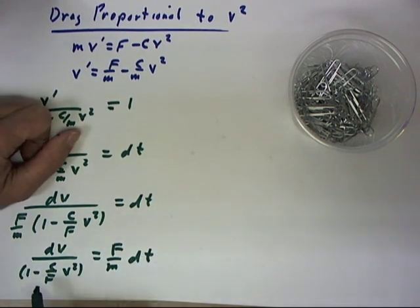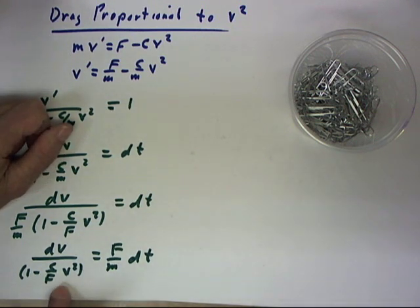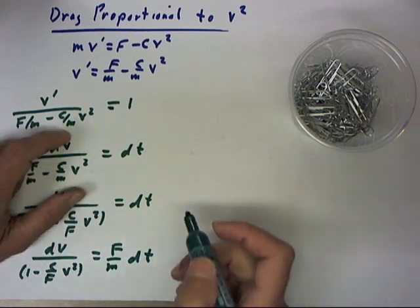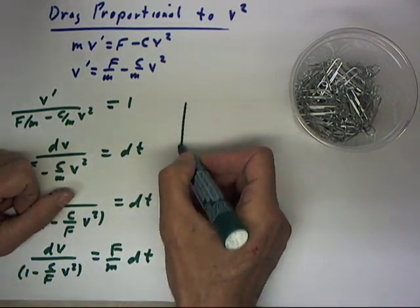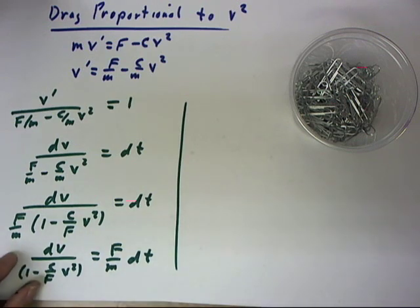Now, this can be simply treated as the difference of two squares. The sum and difference, then, of the square of square root of c/f times v. We'll see that in a minute, and we'll continue with the solution in the very next clip.